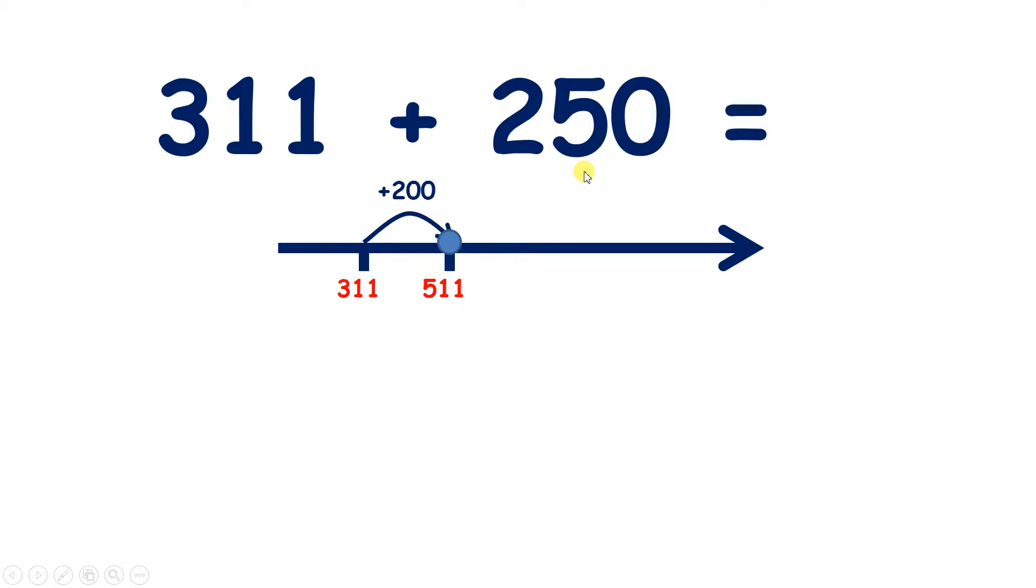So now we need to add our 5 tens. So if we have 1 ten and we add 5 tens, that takes us to 6 tens, so we have our answer 561.